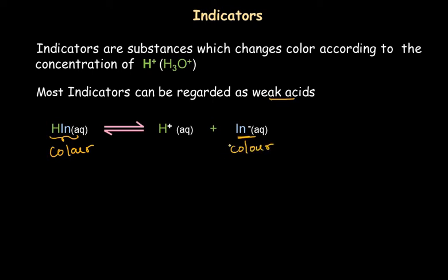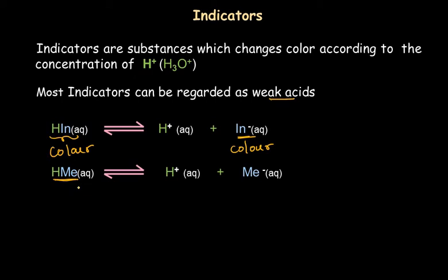Because of this, the indicator can work the way it does in acid and base medium. Let's understand that with the help of an example — methyl orange indicator, which we represent with the symbol HMe. This is the molecular form of methyl orange indicator. If it dissociates partially, hydrogen ion and the Me⁻ anion will be present in the solution.